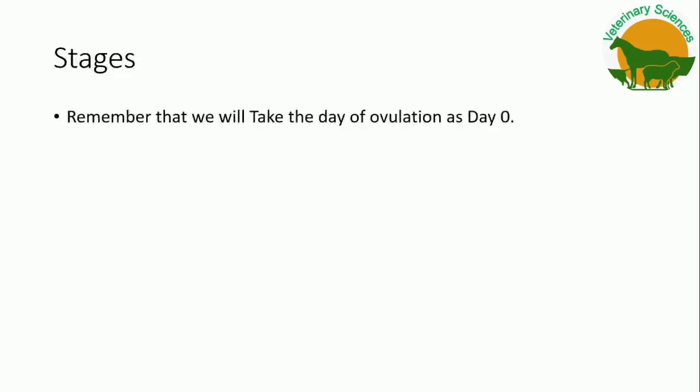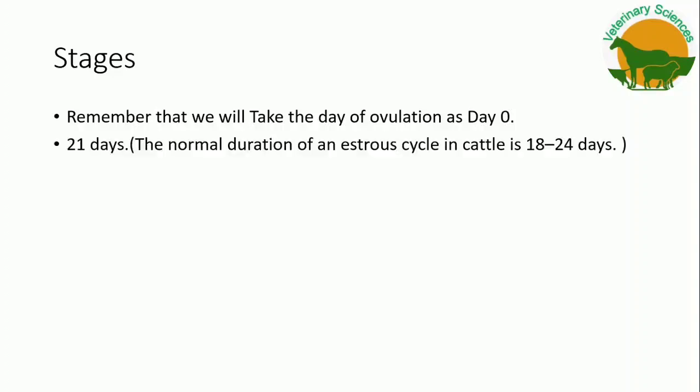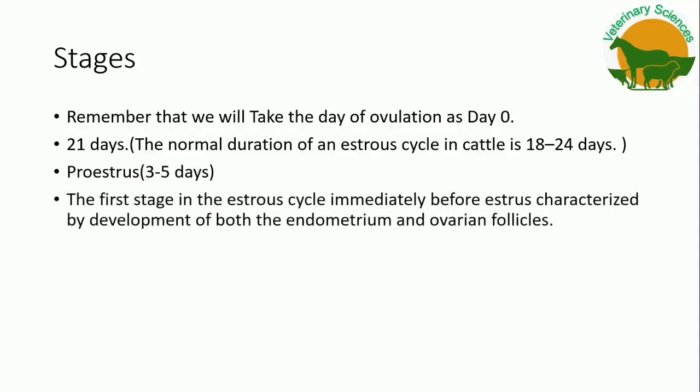Now let us quickly see a brief description of each stage of the estrus cycle of cattle. We are assuming the day of ovulation as day zero. On average, the estrus cycle of a cow is 21 days, ranging from 18 to 24 days. The first stage, proestrus, immediately precedes estrus, ranges from three to five days, and is characterized by development of both the endometrium and ovarian follicles.